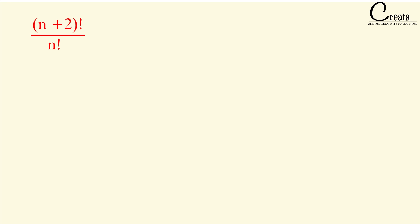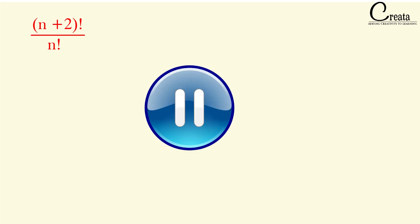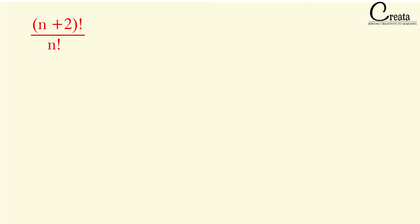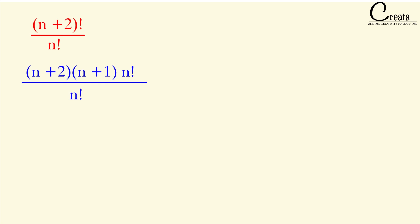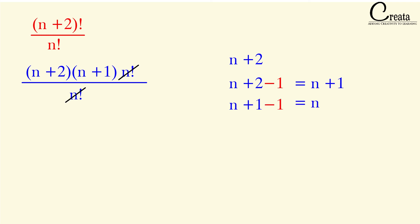Final question: (n+2)! ÷ n!. We rewrite (n+2)! as (n+2) × (n+1) × n!, since the next lower term after (n+2) is (n+1), and after that is n. The n! terms cancel, giving us (n+2)(n+1) as the answer.